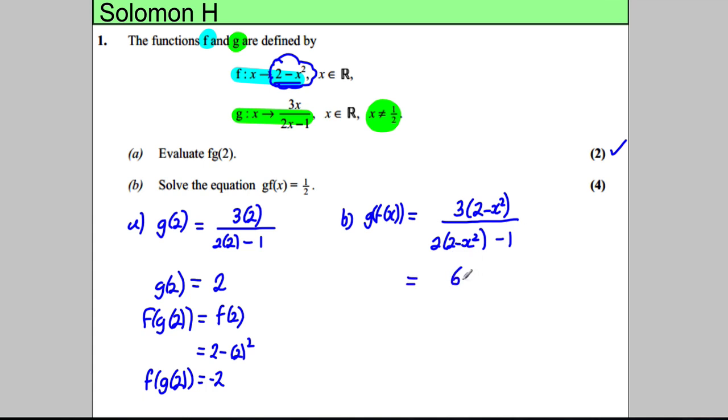Let's tidy this up before we do any equation solving. This would be 6 subtract 3x squared divided by—this multiplied out would be 4 subtract 2x squared take away 1. Tidying this up would be 6 subtract 3x squared divided by 3 take away 2x squared. That's our g of f of x.